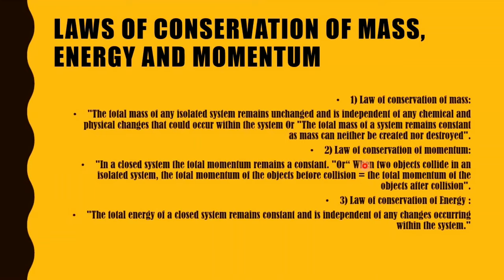The law of conservation of momentum states that in a closed system — where no outside force acts — the total momentum remains constant. Alternatively, when two objects collide in an isolated system, the total momentum before collision equals the total momentum after collision. So if momentum before was 5, after collision it will still be 5.